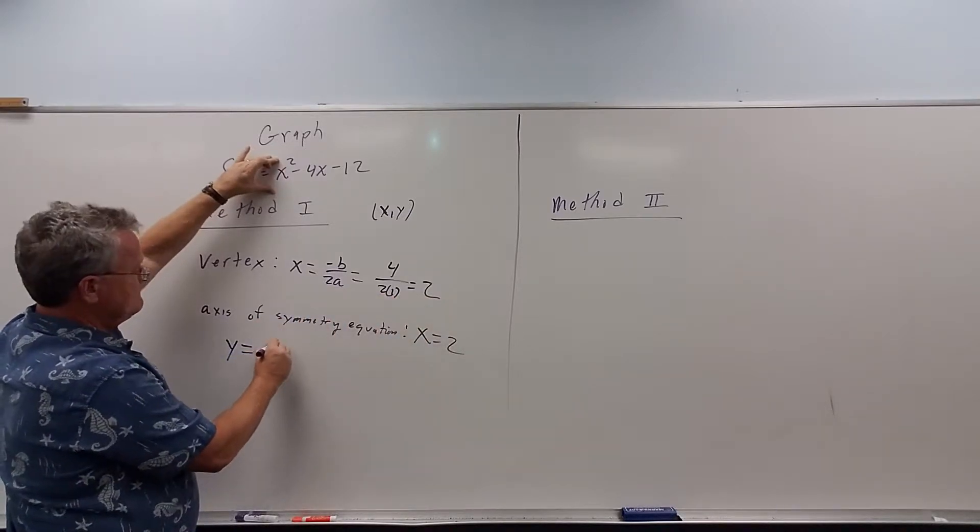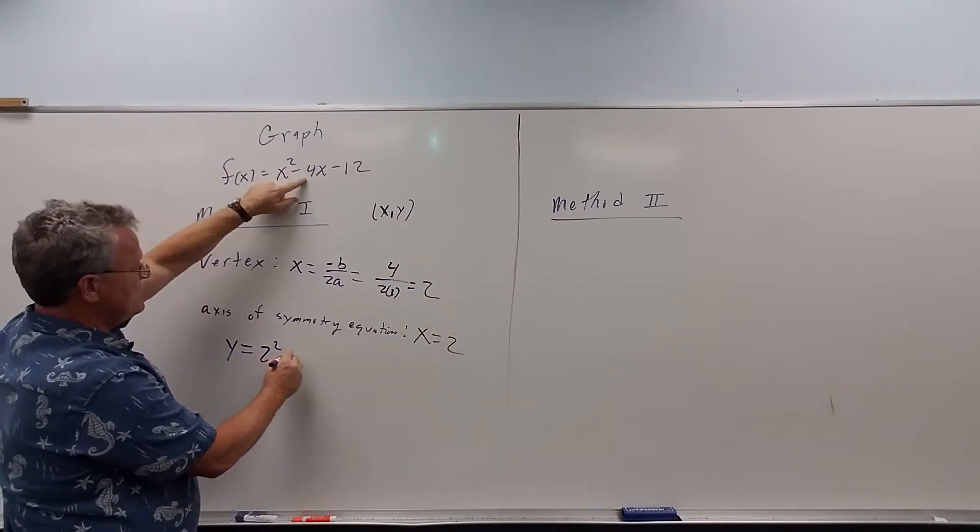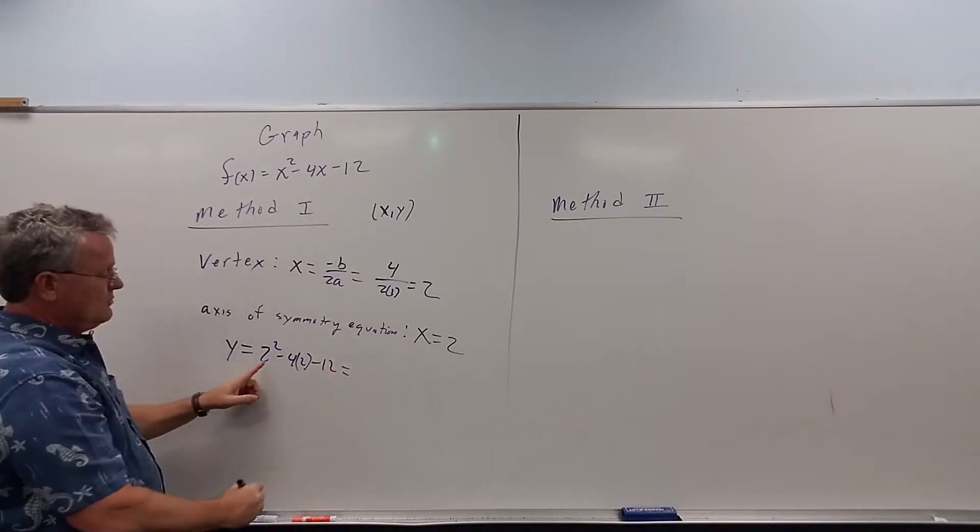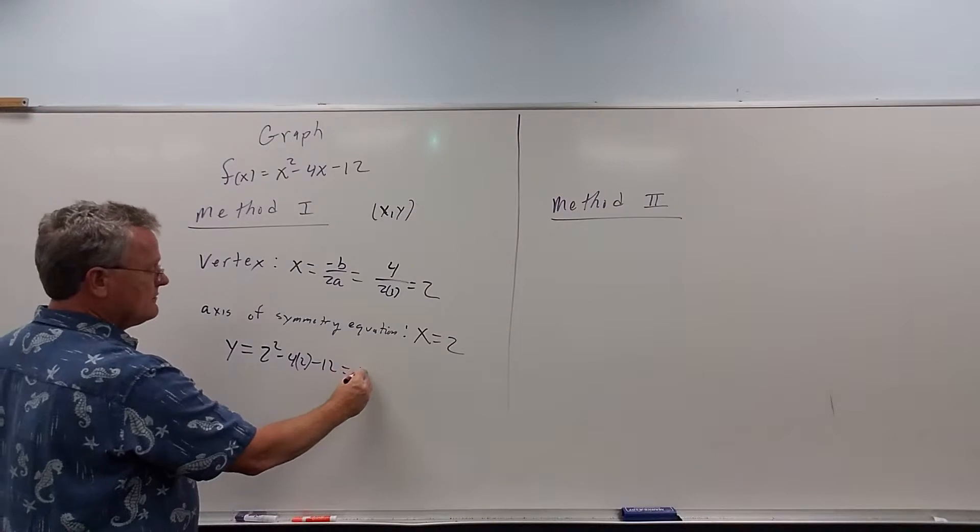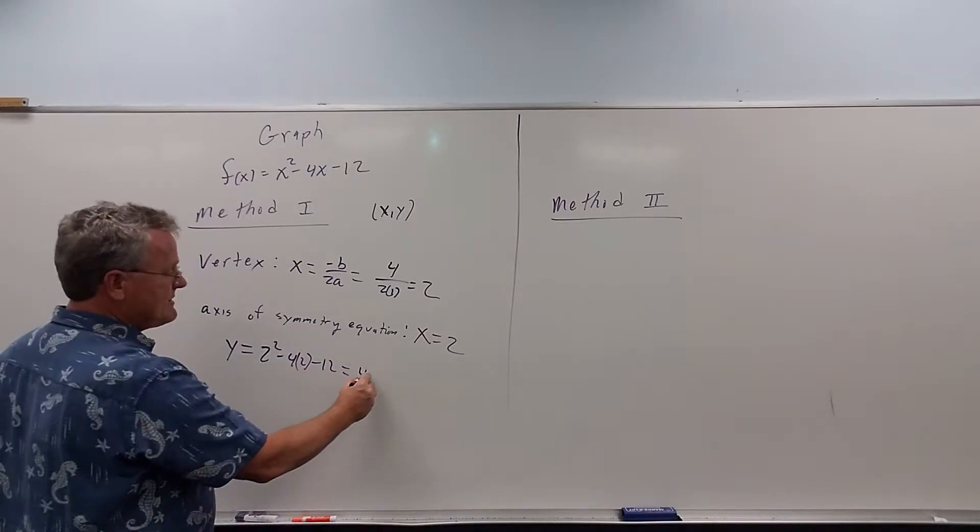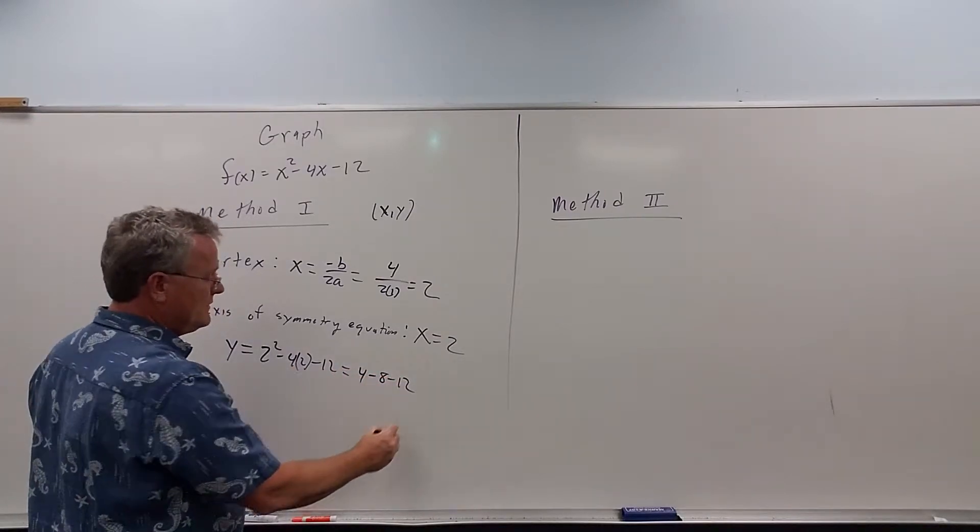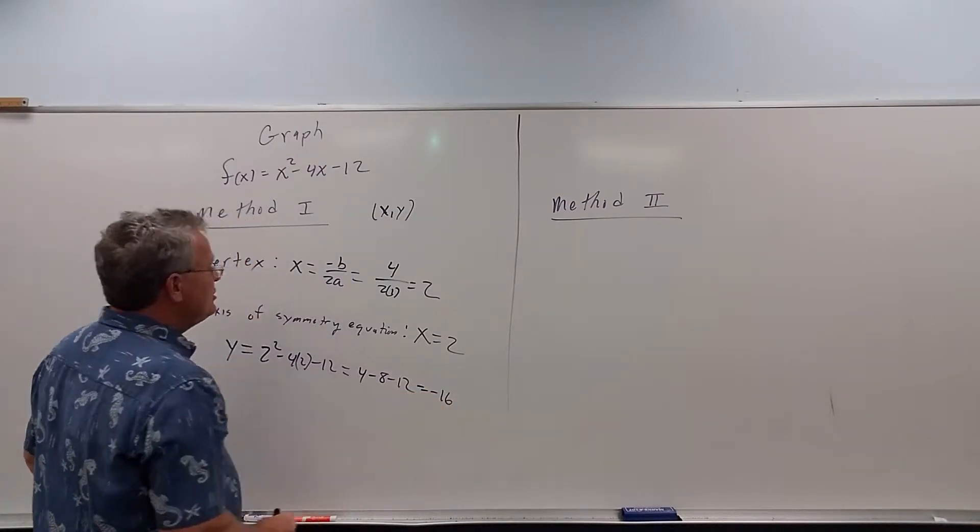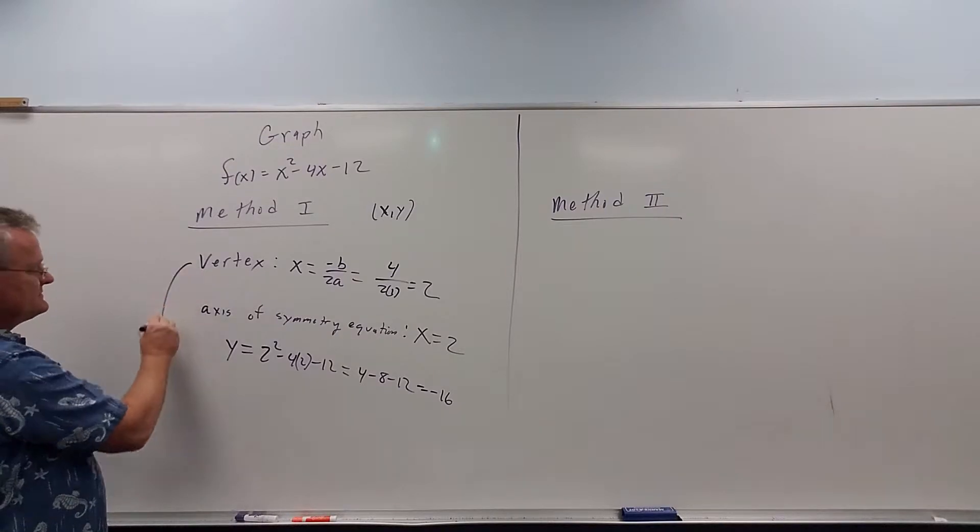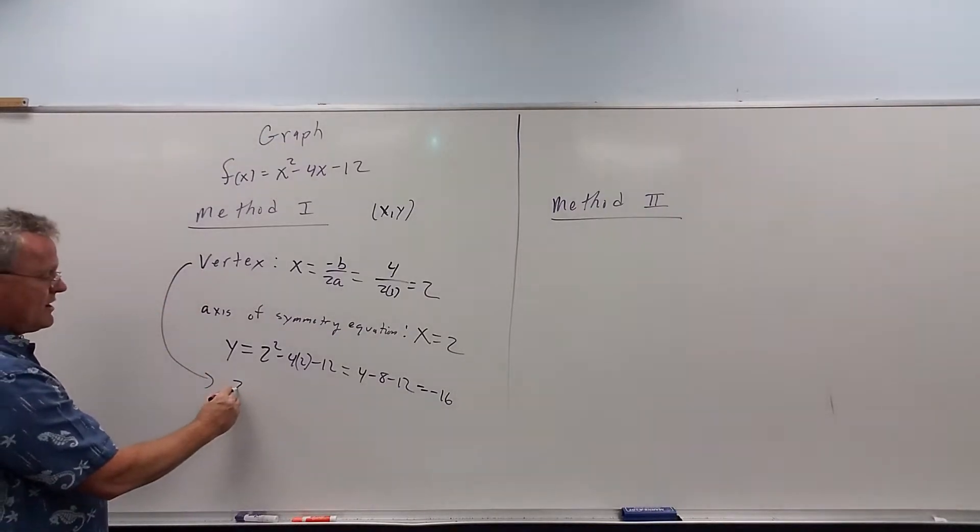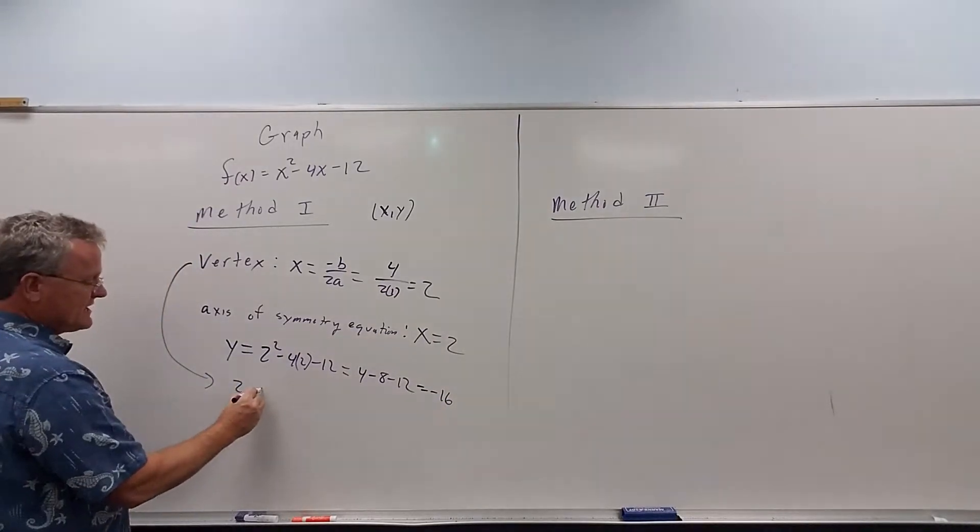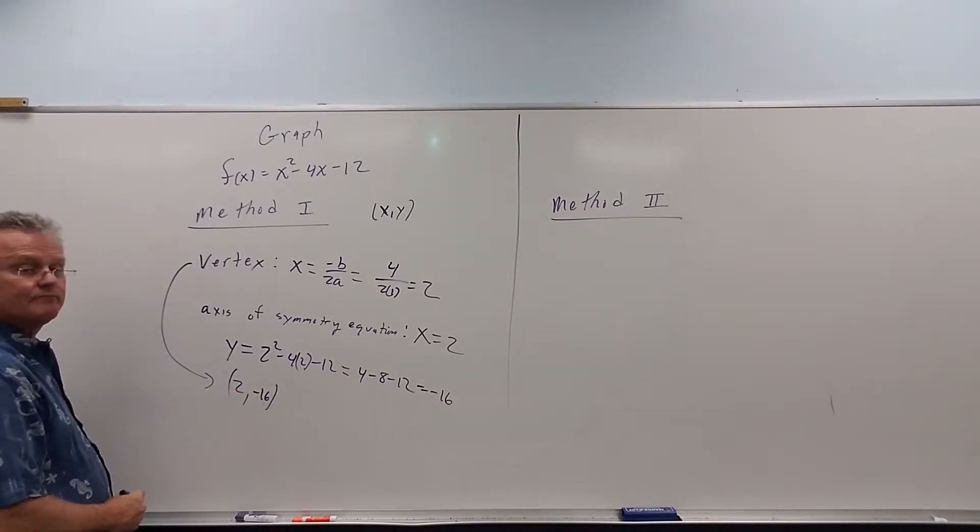So we get 2 squared minus 4 times 2 minus 12. We get 4 minus 8 minus 12. And if you add that up, we get minus 16. So the vertex is actually located at the point (x, y). x is 2, y is negative 16.